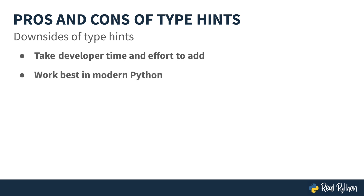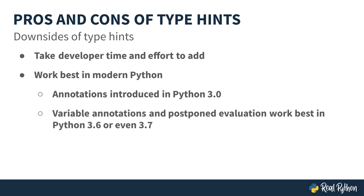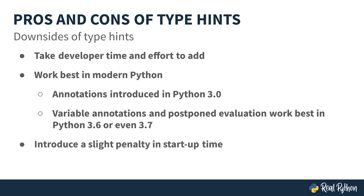Type hints work best in modern Python. Type comments were available in Python 2.7, but improvements like annotations were only introduced into Python 3, and the idea of using them for type hints happened in 3.5. More advanced features such as variable annotations and postponed evaluation work best in Python 3.6 or even 3.7. There are links below this video for more information. Type hints also introduce a slight penalty in startup time, especially if importing the typing module. In general, it's a small hit.